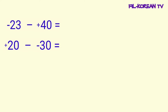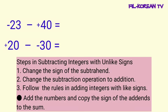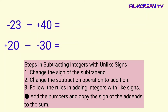Now, let's subtract integers with unlike signs. Steps in subtracting integers with unlike signs: First, change the sign of the subtrahend. Second, change the subtraction operation to addition. Third, follow the rules in adding integers with like signs.